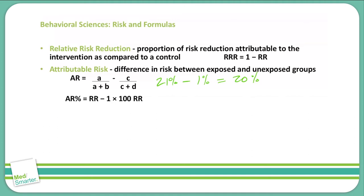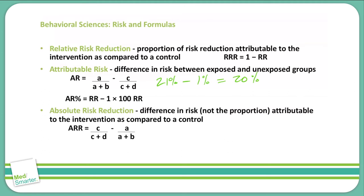Finally, the absolute risk reduction. This is the difference in risk — not a proportion, but a difference in risk — attributed to the intervention as compared to the control. That formula is C over C plus D, minus A over A plus B. This is very similar to attributable risk, so you need to make sure you're very aware of the different formulas and how they're set up so you can answer these questions quickly and easily.